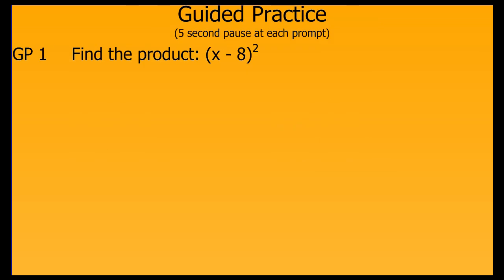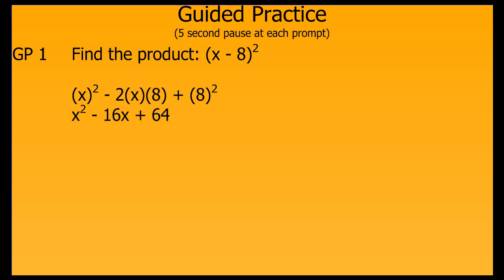Now for our guided practice section. We're going to work through some problems together. You do not need to write down these problems — just step through them with me. At each step, I'm going to prompt you with the question you should be asking yourself, then pause for about 5 seconds for you to think about it, then show you. Our first question: what are we trying to do here? We're trying to find the product — in this case, the square of the quantity x minus 8. We follow our pattern: first term squared, then twice the product of the first and second term, then the second term squared. Now we simplify and get our product. We're done.